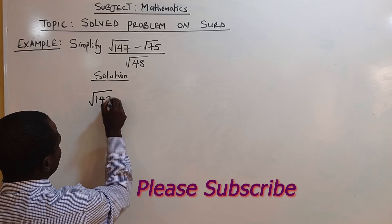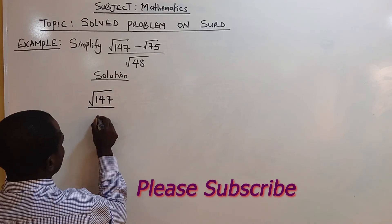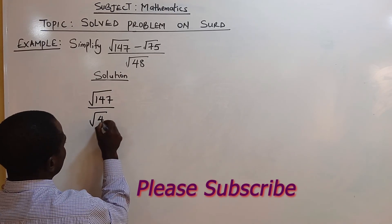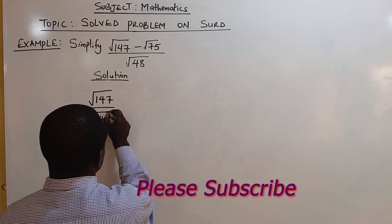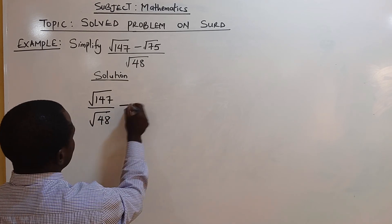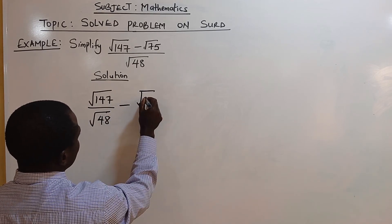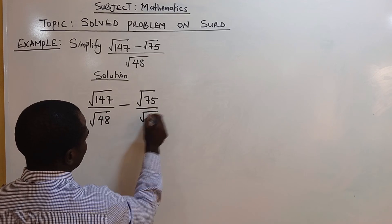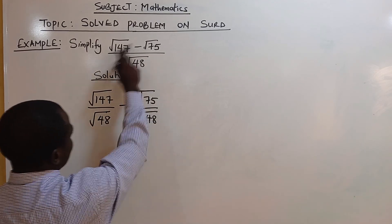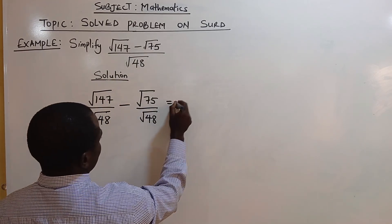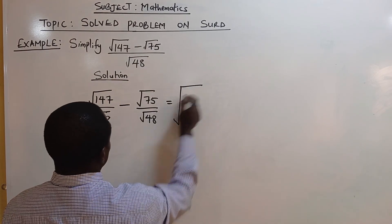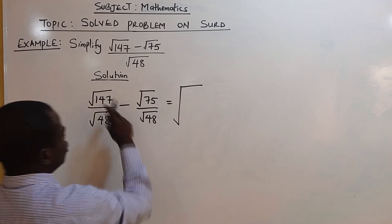What you need to do is put it under square root of 48 minus square root of 75 over square root of 48, which is common to both. So we have a common square root for the two of them.